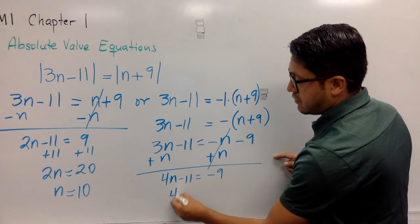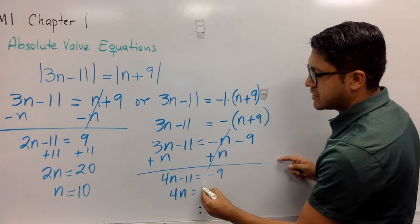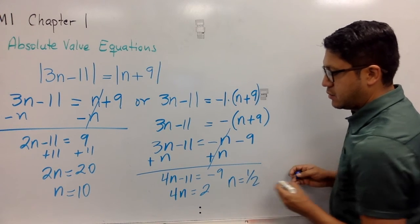And now 4n equals, we add 11 on this side, so it's going to be 2. So in the end, n equals one half.